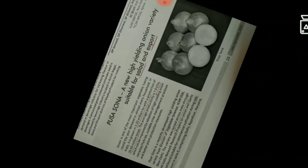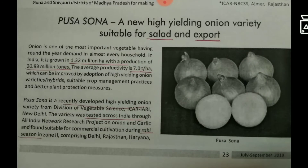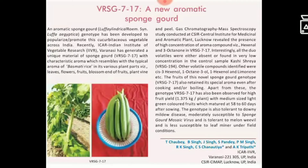Another new onion variety is Pusha Sona, grown under the Rabi season. It is suitable for export, mostly to European countries and USA, and is also used for saloon purposes. The TSS content is 10 ± 2 degrees Brix.